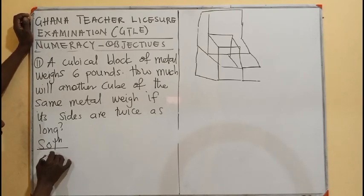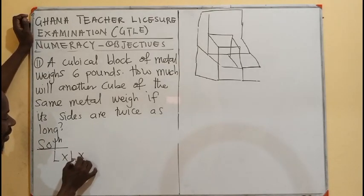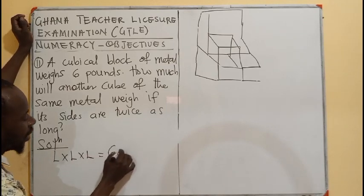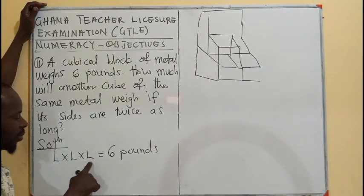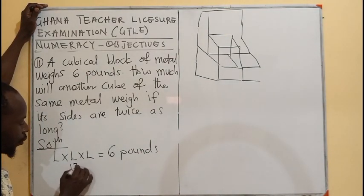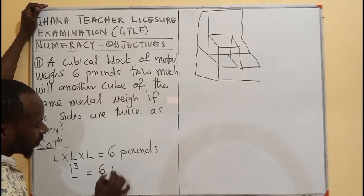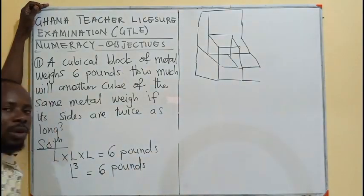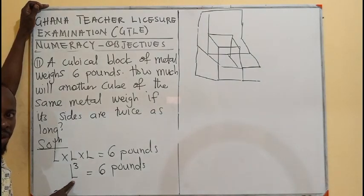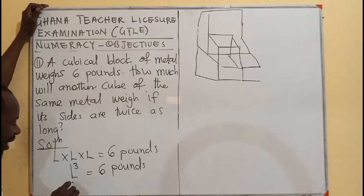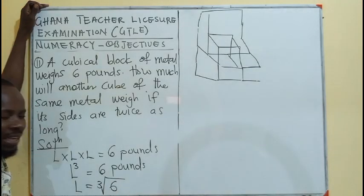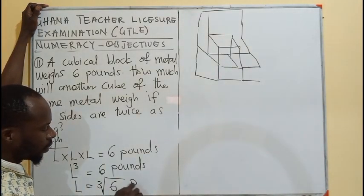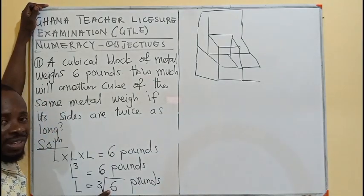But, we are aware that since it's a cube, we are going to have the length times the length times the length. And that is giving us the six pounds. In this case, if you multiply three length, that gives you L cubed equals to six pounds. So, this is the length which we are looking for. But, it is having a power of three. So, we find the cube root of both sides. That gives us the length equals to the cube root of six.